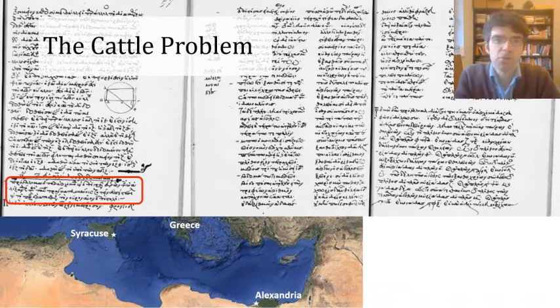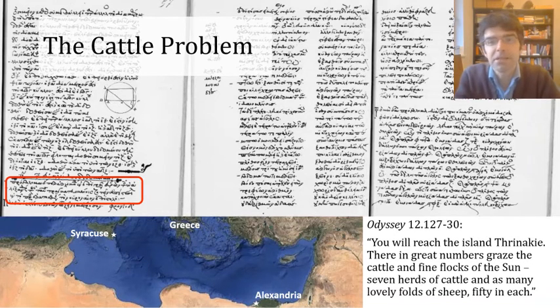Just like in his works called Sand Reckoner and Stomachion, the poem connects the mathematics of big numbers to an engaging and non-specialist idea. This problem takes as its starting point a couple of lines from Homer's Odyssey, a text that anyone reading this poem in ancient Greece would have known from more basic levels of education.